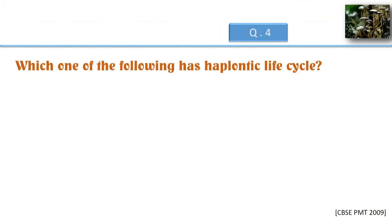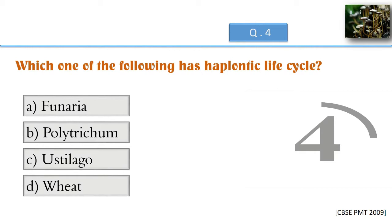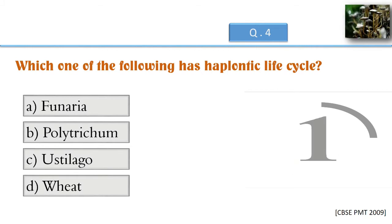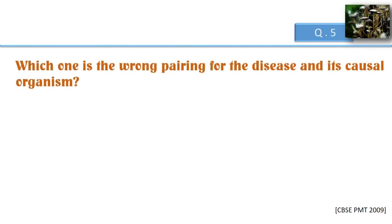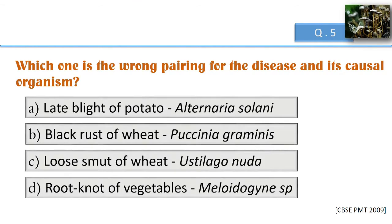Which one of the following has a haplontic life cycle? Which one is the wrong pairing for the disease and its causal organism?